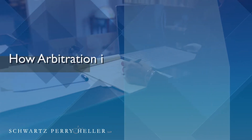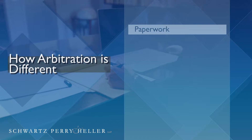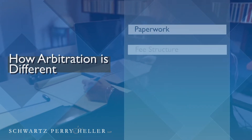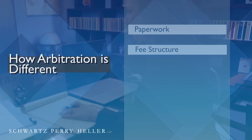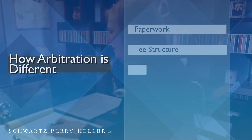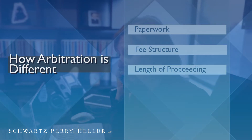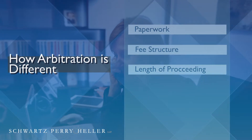Arbitration is very different than going to court. First and foremost, the paperwork that's involved is very different. The fees associated with court and arbitration are also quite different. Arbitration is a much faster process than a court proceeding — it could take a matter of months versus a number of years.